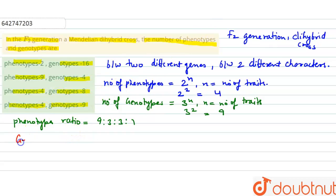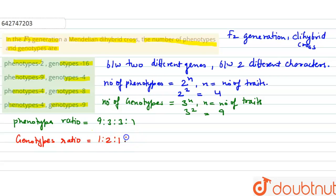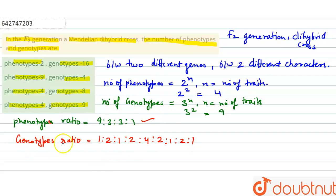The genotype ratio obtained from the dihybrid cross is 1:2:1:2:4:2:1:2:1. This is the phenotype ratio and this is the genotype ratio for the dihybrid cross.